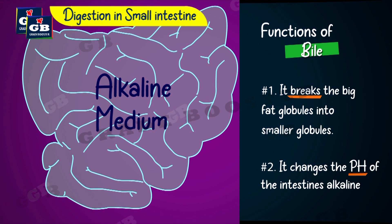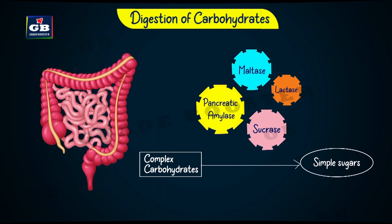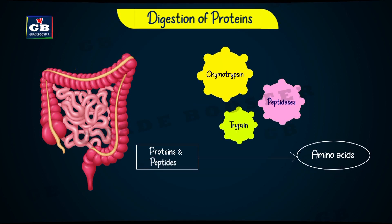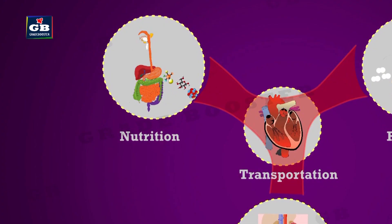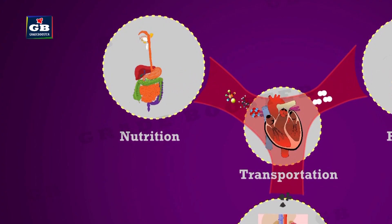The digestion of food is completed in the small intestine. In the complete process of digestion, carbohydrates are converted to sugars, proteins are converted to amino acids, and fats are converted to fatty acids and glycerol. The nutrients formed during digestion reach the cells through the blood circulatory system.